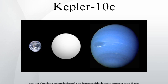Kepler-10 is a G-type star located 173 parsecs from Earth. It is 0.895 solar masses and 1.056 solar radii, making it slightly less massive than the Sun, but approximately the same size. With an effective temperature of 5627 kelvins, Kepler-10 is cooler than the Sun. The star is also metal-poor and far older; its metallicity is measured at [Fe/H] = −0.15. Kepler-10 has a measured age of approximately 10.6 billion years and an apparent magnitude of 11.2, which means that the star is invisible to the naked eye from the perspective of an observer on Earth.